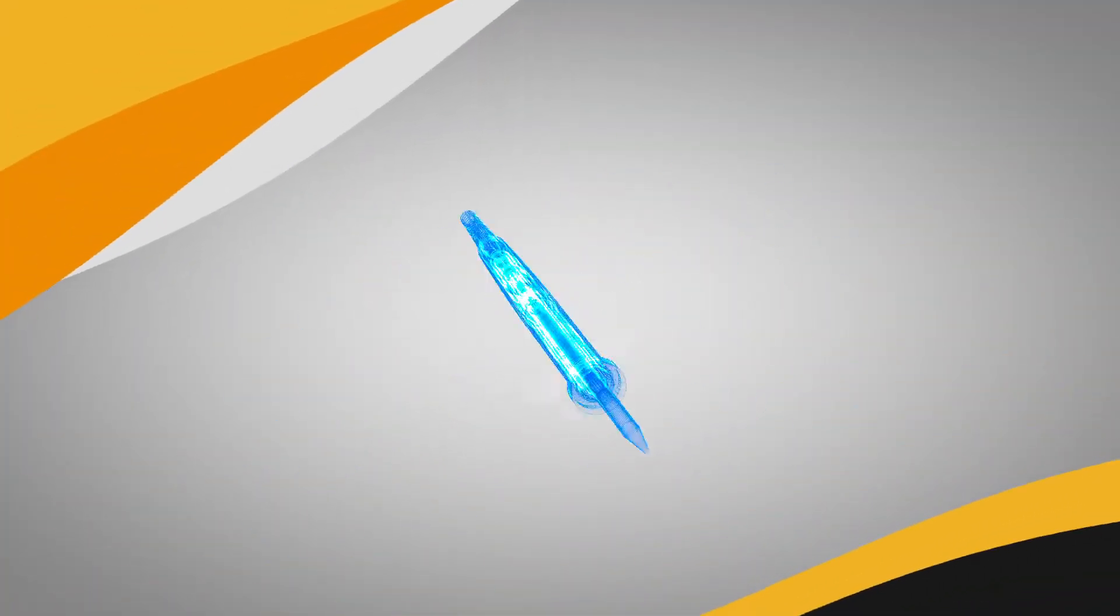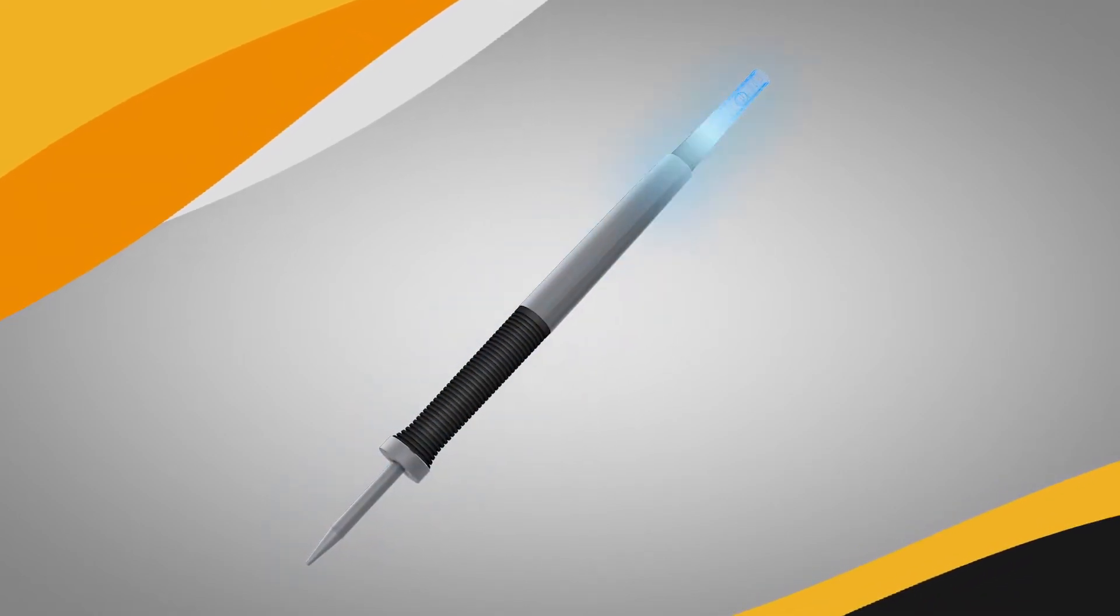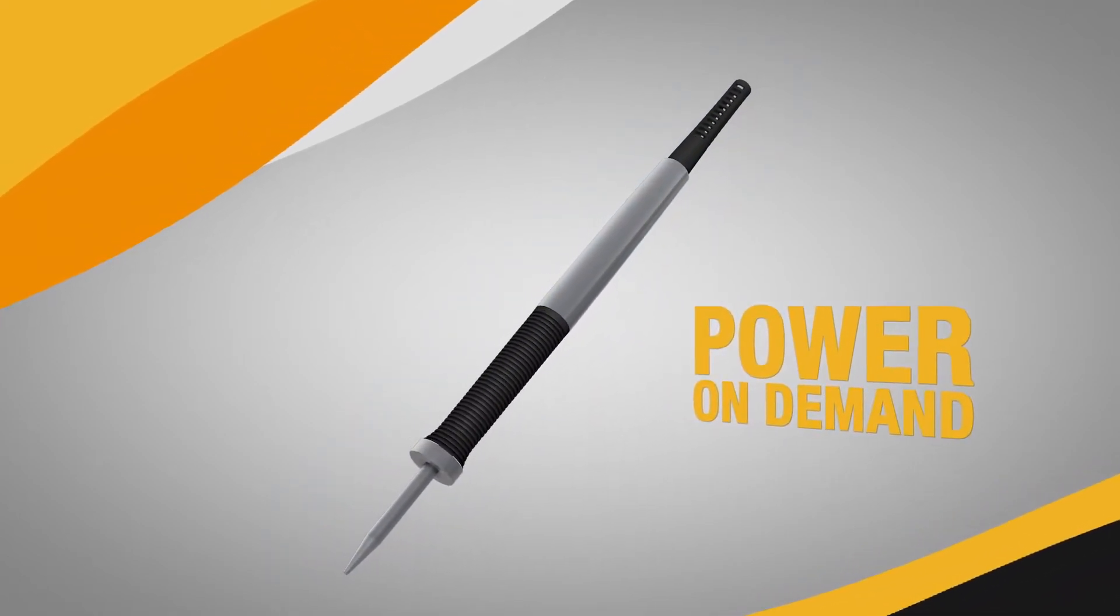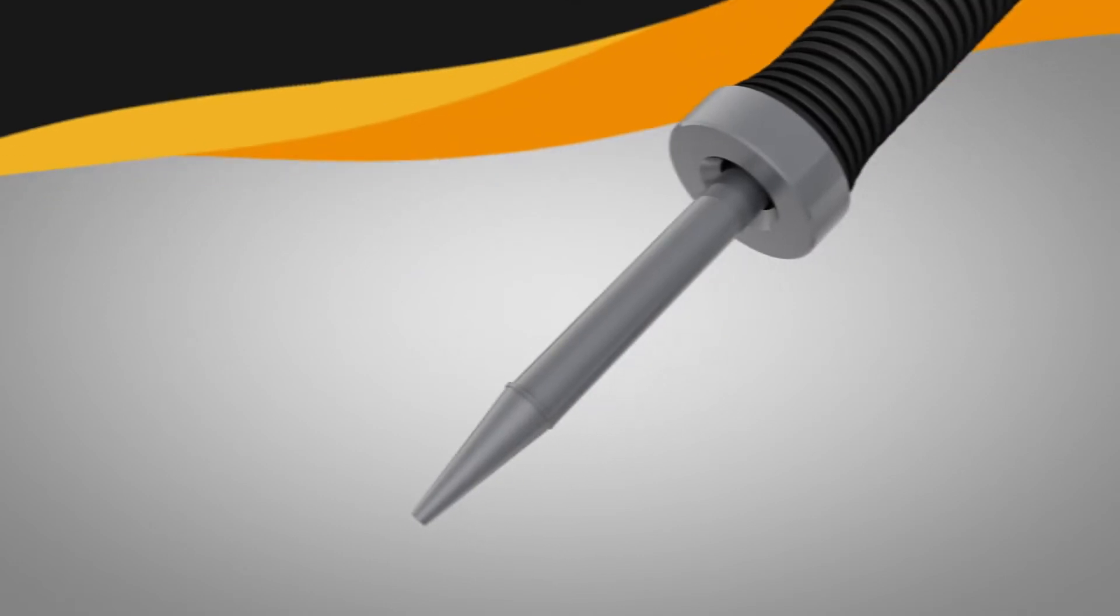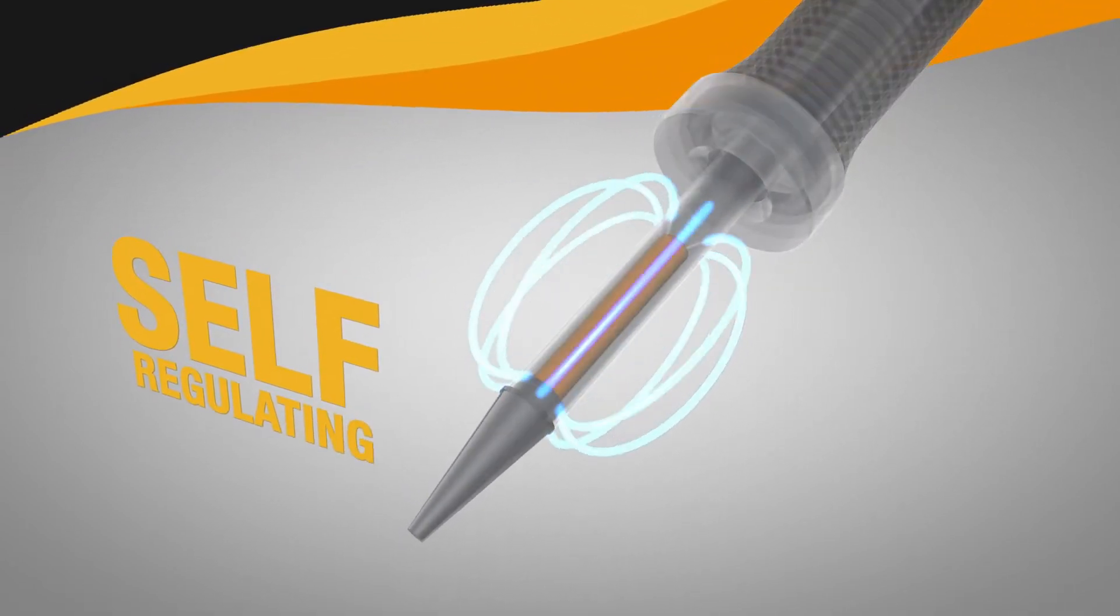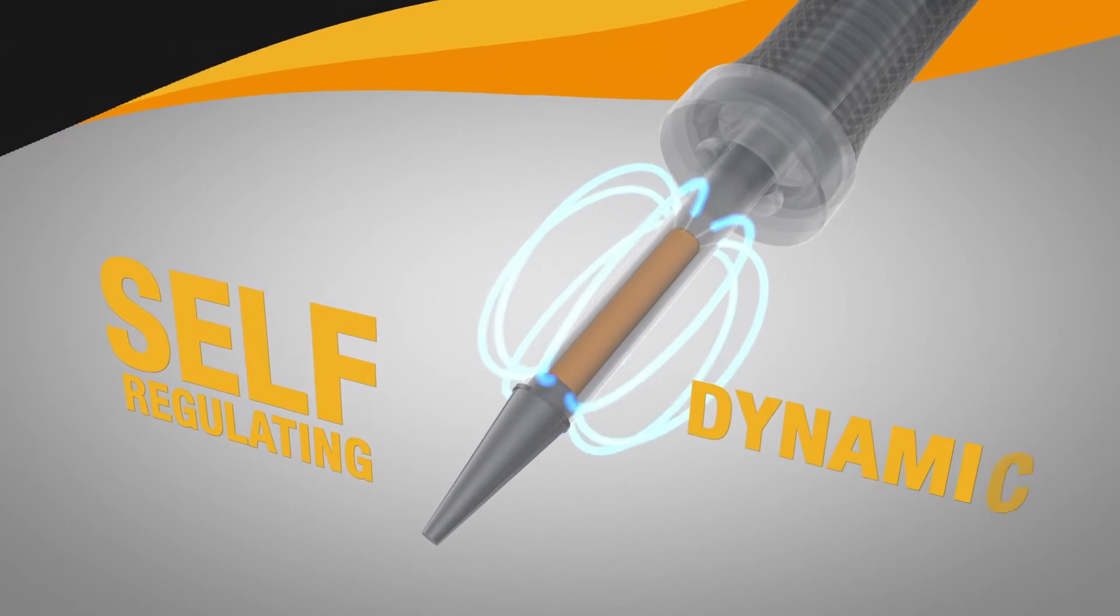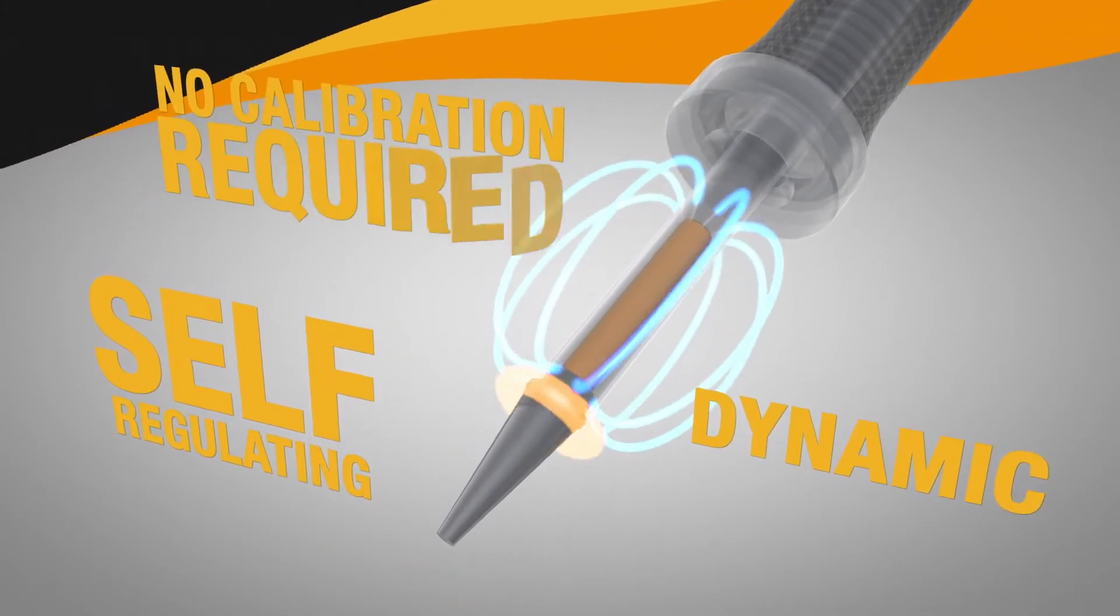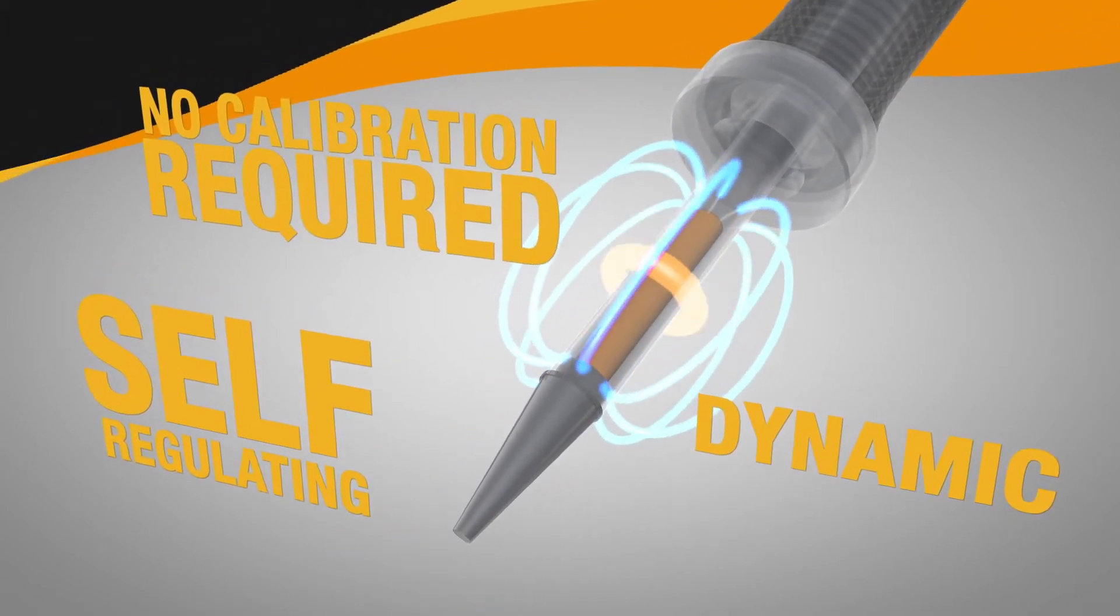SmartHeat senses the thermal load and instantly delivers power on demand directly to the joint. The precise amount of power is delivered using a self-regulating heater embedded in the tip. This provides a fast, safe and repeatable process with no calibration required.